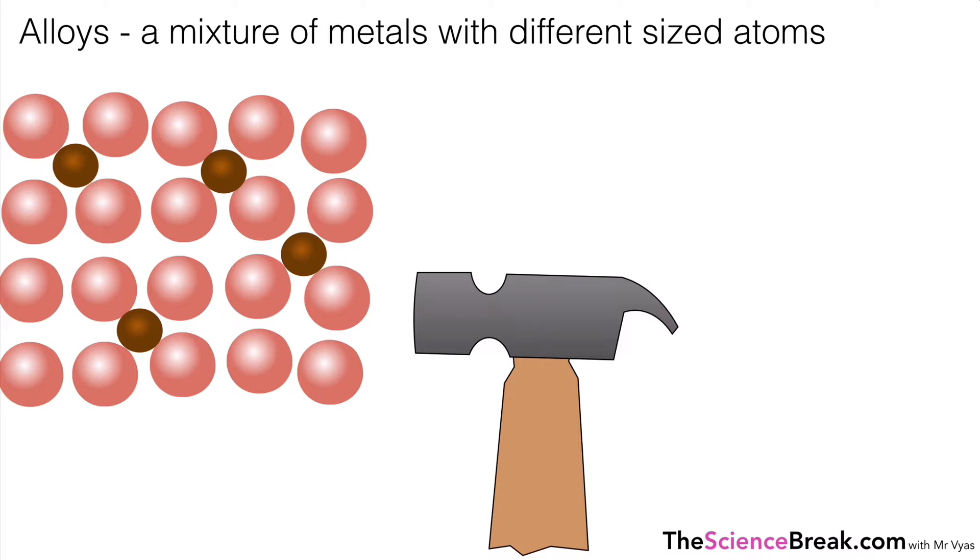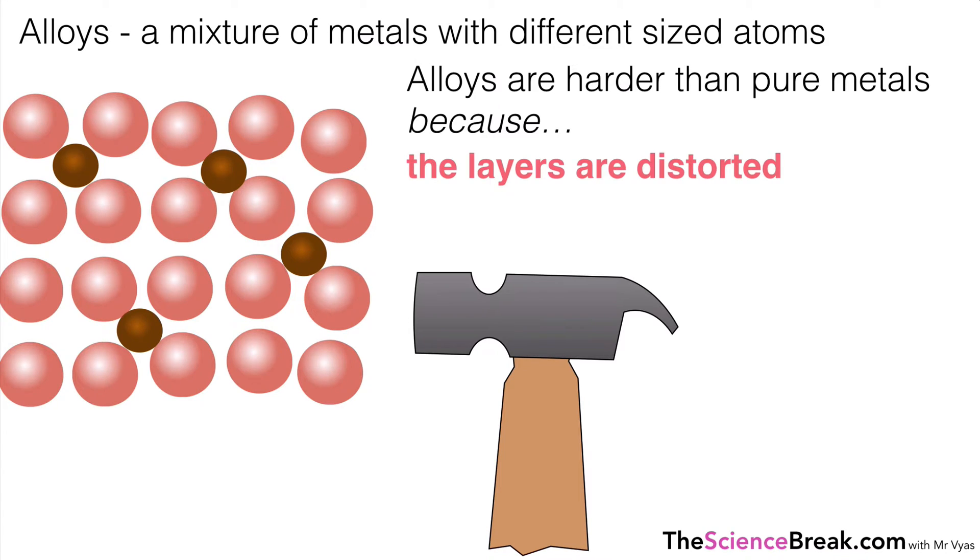That makes pure metals quite soft, but if we have an alloy which is a mixture of metals and with different sized atoms, that means the layers are no longer in neat rows and columns. And we could say the alloys are harder than pure metals because the layers are distorted and because the layers are distorted they cannot slide over each other.